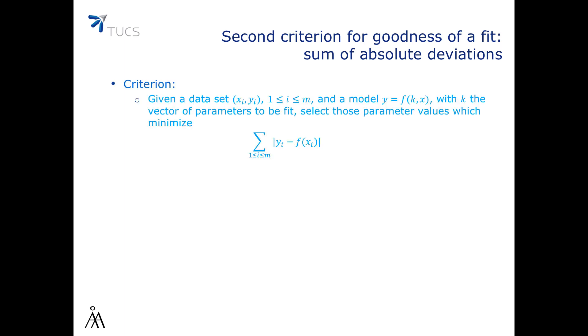Here is the second criterion for the goodness of a fit: minimize the sum of the absolute deviations between the model and the data points. This can be formalized as follows: given a dataset x, y and a model with k being the vector of parameters to be fit, we have to select those parameter values which minimize the sum of the absolute values of y minus f of x.